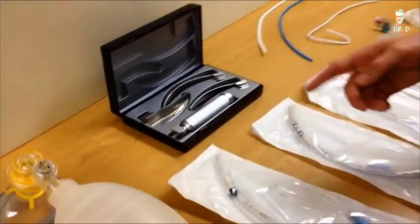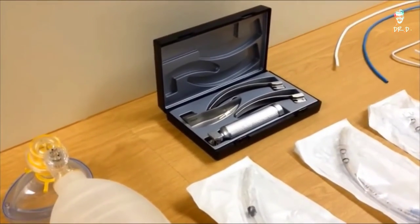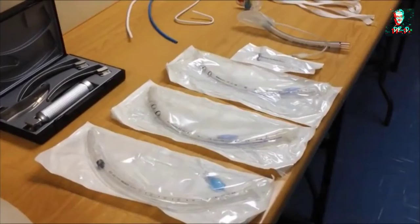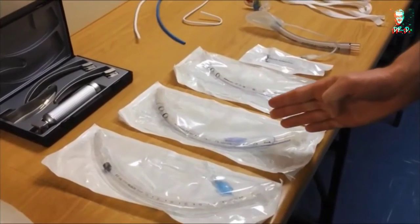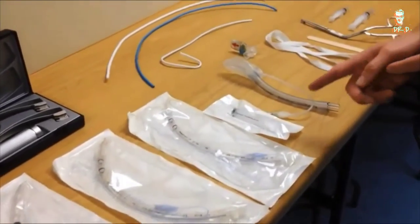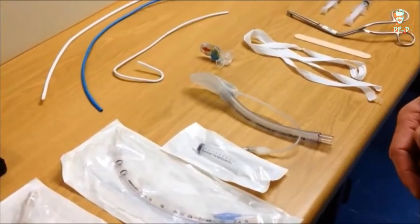You should have a laryngoscope with a selection of blades checked in good working order, and you should have a selection of sizes of endotracheal tubes. We suggest the size you're going to use and one size above and one size below. You should have a 10mm syringe to inflate the pilot cuff and the cuff of the ET tube.